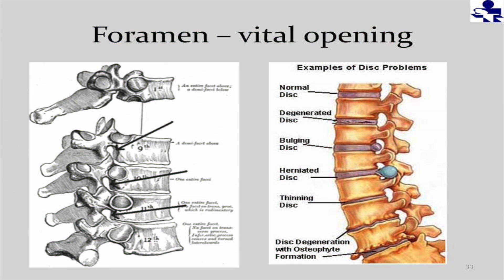Foramen is a term that means opening. This slide shows those nice openings that should be there in the bones of your spine — they're very important because those spinal nerves that come off the spinal cord pass through there. You also have very vital blood vessels that come through there. The slide on the right shows a normal disc and you see how that keeps the bones apart — you have a nice, patent foramen where there should be no problem with nerve conduction and blood flow.